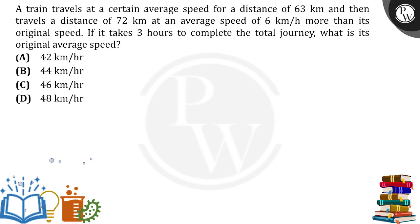A train travels at a certain average speed for a distance of 63 km and then travels a distance of 72 km at an average speed 6 km/h more than its original speed. If it takes 3 hours to complete the total journey, what is its original average speed?